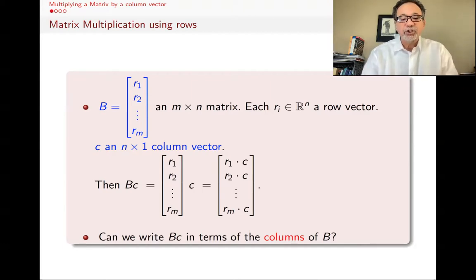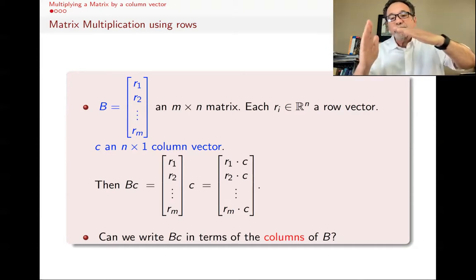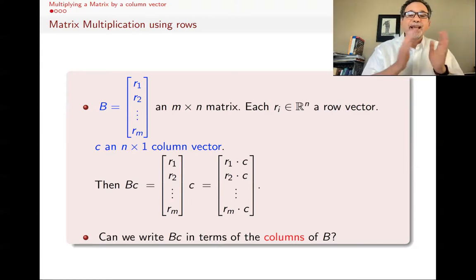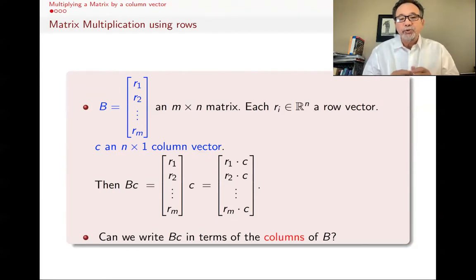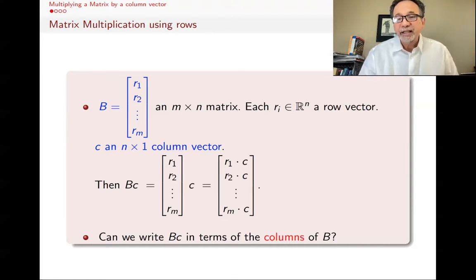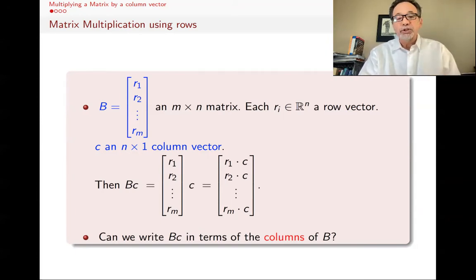Now the question for this lecture is: can we write B·C in terms of the columns of B? In the definition we just used the rows of B — take the rows and find a dot product. The question is whether we can write it in terms of columns. Why would we care? The reason is that sometimes we have different kinds of information and there are different things we want to do with matrices. In particular, sometimes we want to know things about columns of B, and that will come up in future lectures quite a bit. Knowing how to write the product in terms of the columns will be extremely useful.